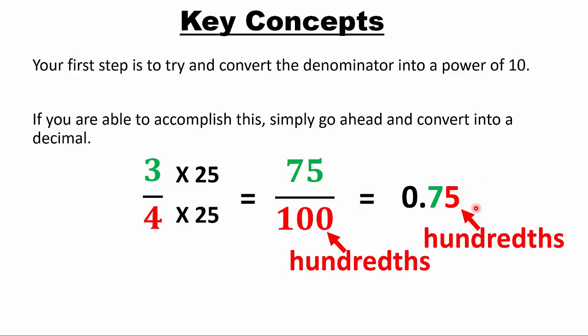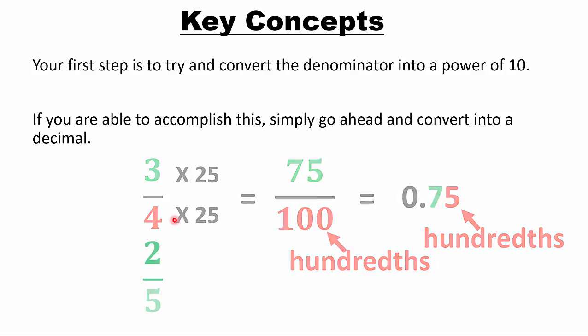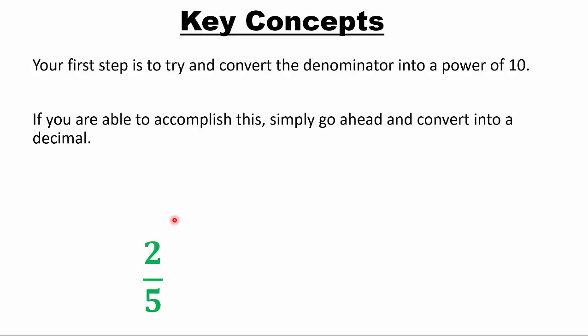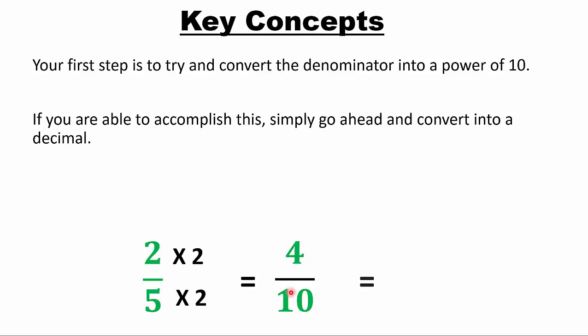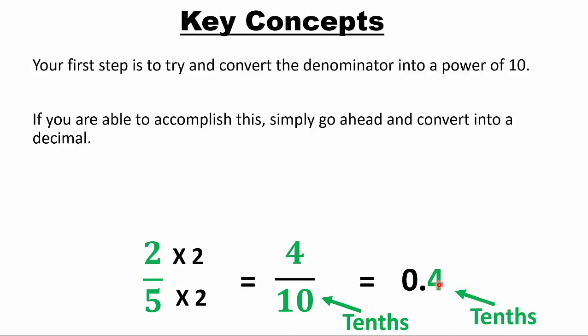There's no 'fourths' place value — place values are tenths, hundredths, and thousandths. Moving on: 2/5. The first thing to think about is the denominator. Can you turn it into a power of 10? Yes — multiply by 2 to get 10. Multiply the numerator by 2 as well, and you get 4 tenths, which is 0.4.